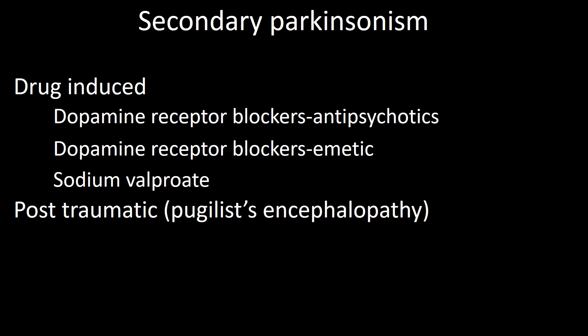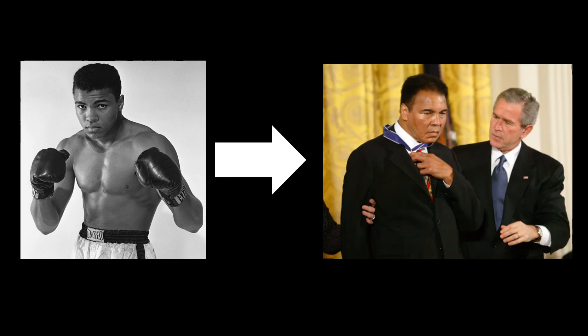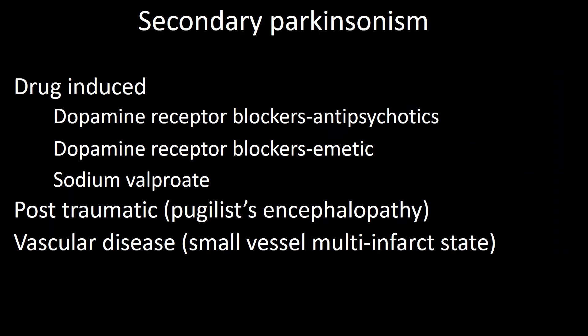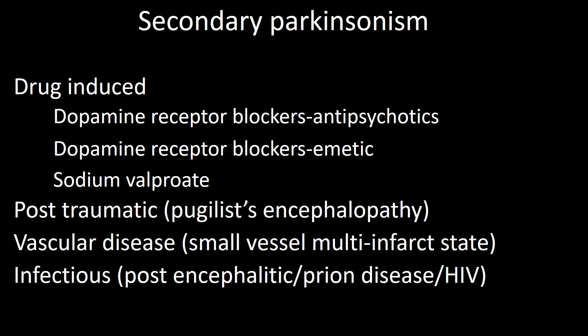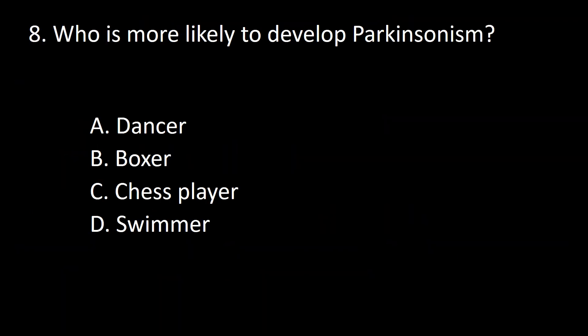Secondary Parkinsonism can also occur in boxers — shown here with Muhammad Ali — presenting with a mask face. Small vessel disease, shown on MRI with a large number of small infarcts in the basal ganglionic area, can also produce secondary Parkinsonism; these patients often display other signs of CNS abnormalities. Lastly, infections — prion disease, HIV, or viral encephalitis — may also cause Parkinsonism. So the answer is B, boxer.